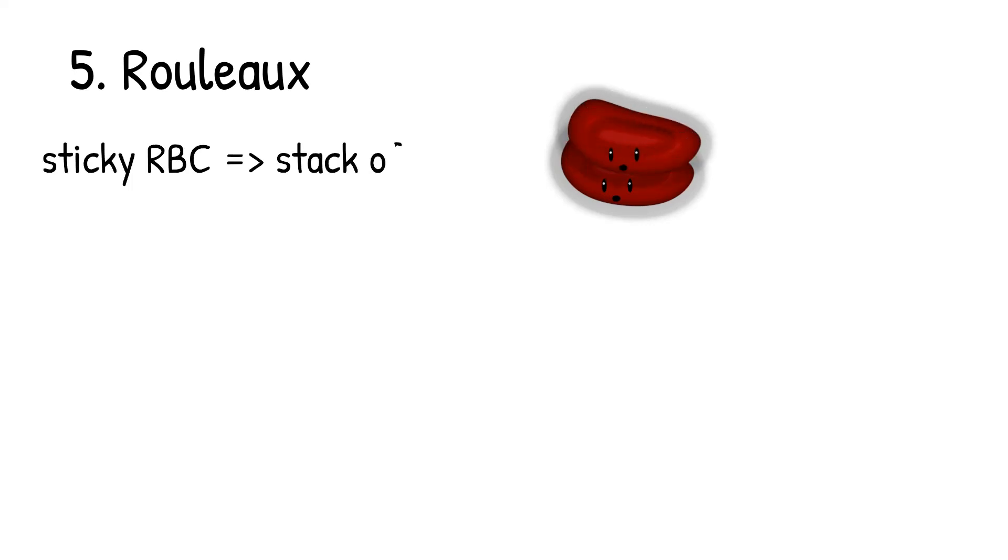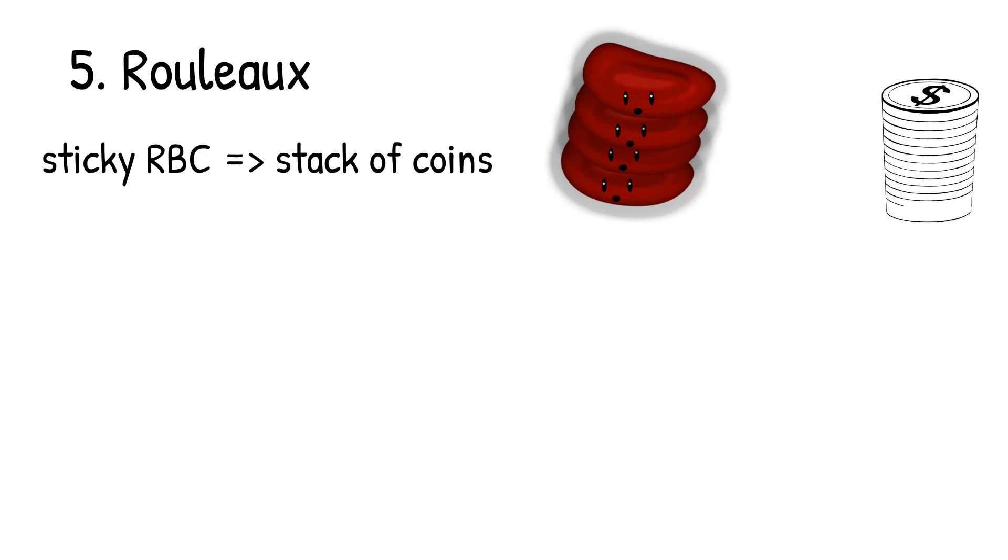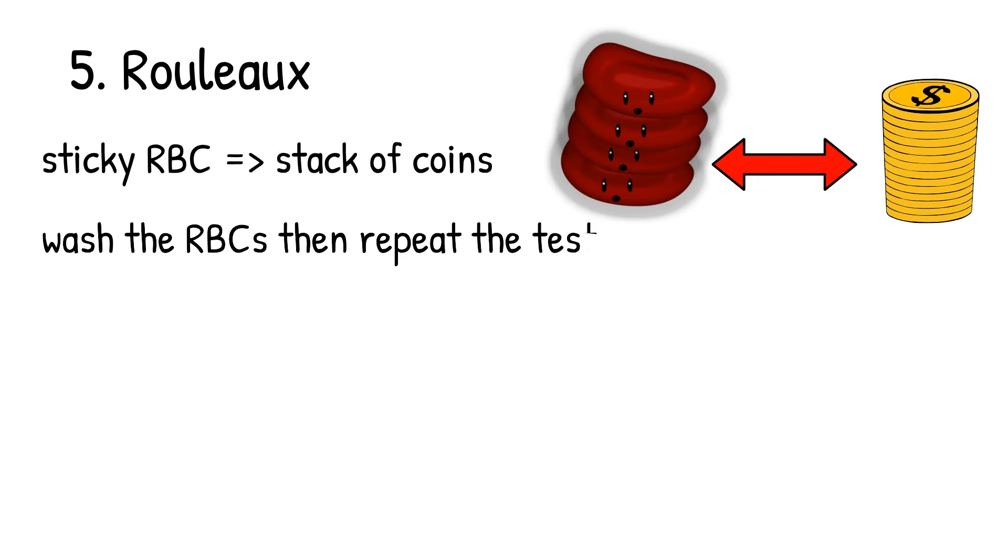Fifth, rouleaux. Rouleaux is a condition that makes the red blood cells become very sticky because the extra protein in the serums. The red blood cells stick to each other in a stack like often referred to as a stack of coins. To solve these problems, wash the red blood cells, then repeat the test.